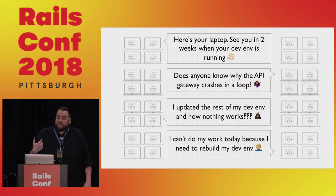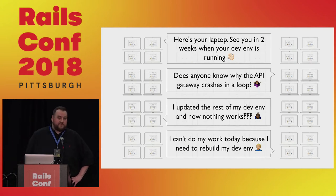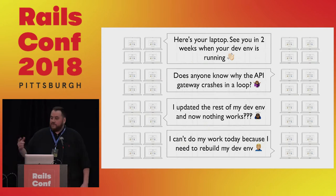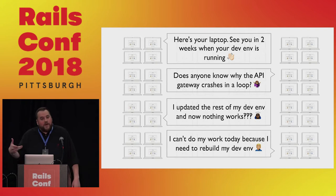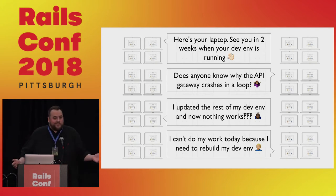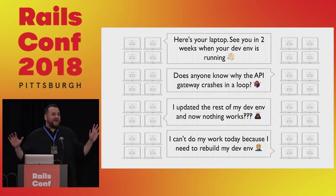By introspecting on our own experiences and listening to our co-workers, we were able to find themes and common frustrations. Here's your laptop — we'll see you in two weeks when your development environment is running. What happened? Does anyone know why the API gateway crashes in a loop? I updated the rest of my development environment and now nothing works. I can't do my work today because I need to rebuild my development environment. That's clearly untenable and becoming worse over time. How many people out there have actually had a development environment like this or experienced these things?